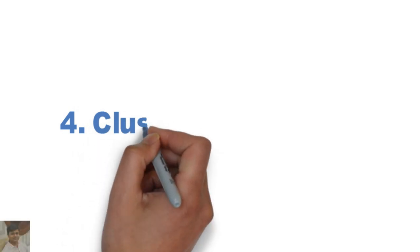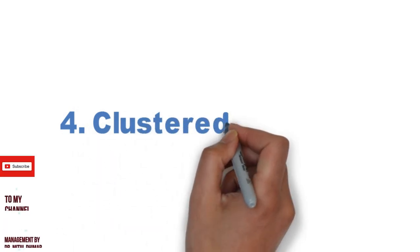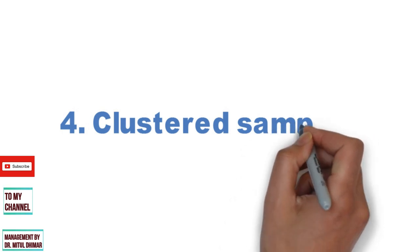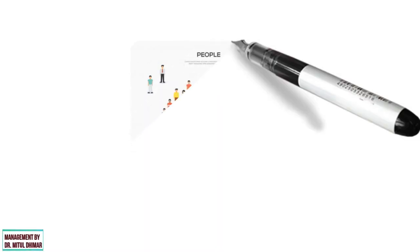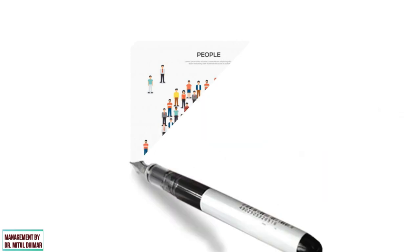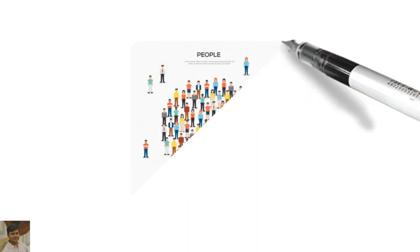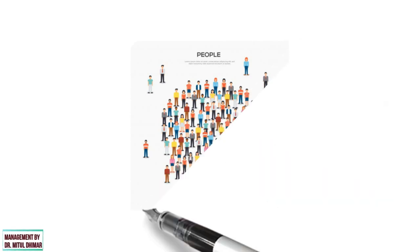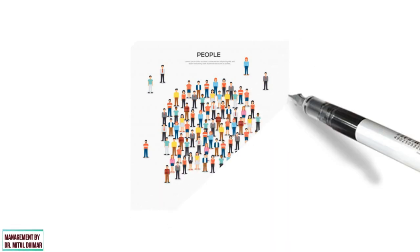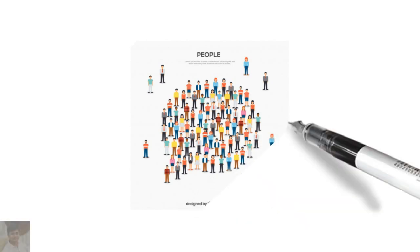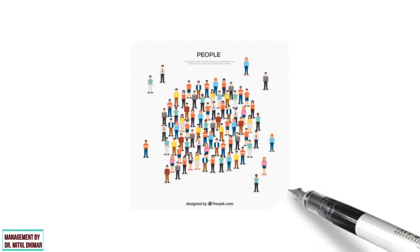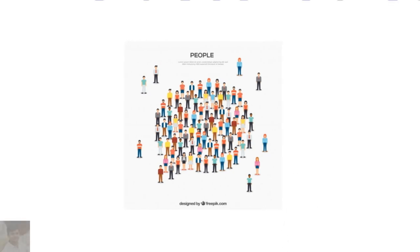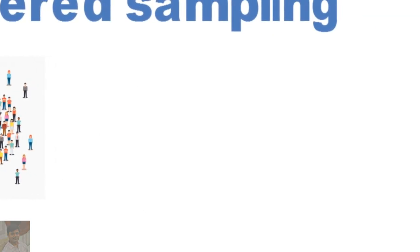Number 4: Clustered Sampling. In clustered sampling, subgroups of the population are used as a sampling unit rather than individuals. The population is divided into subgroups known as clusters, which are selected randomly to be included in the study. Each cluster can be treated as a small population that has all the attributes of the population. Clustered sampling can be more efficient than simple random sampling, especially when a study takes place in a wide geographical region.